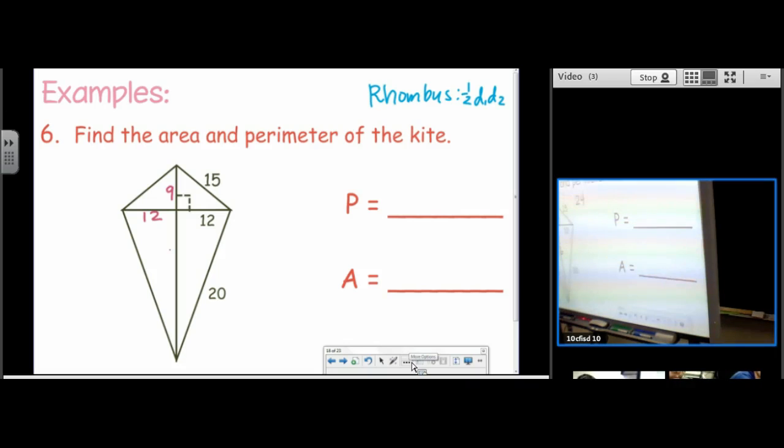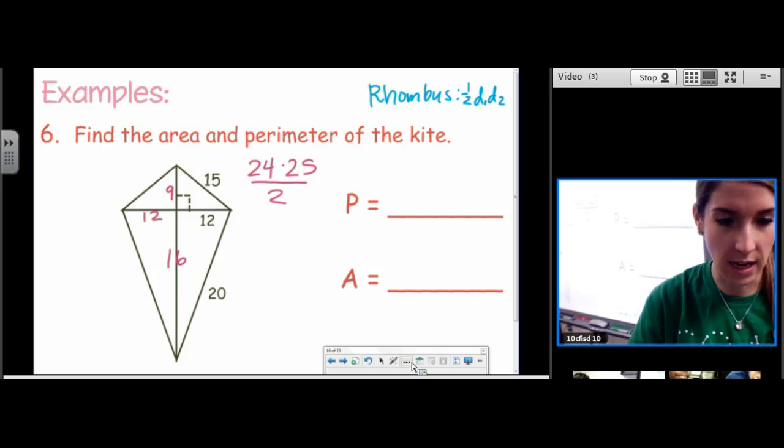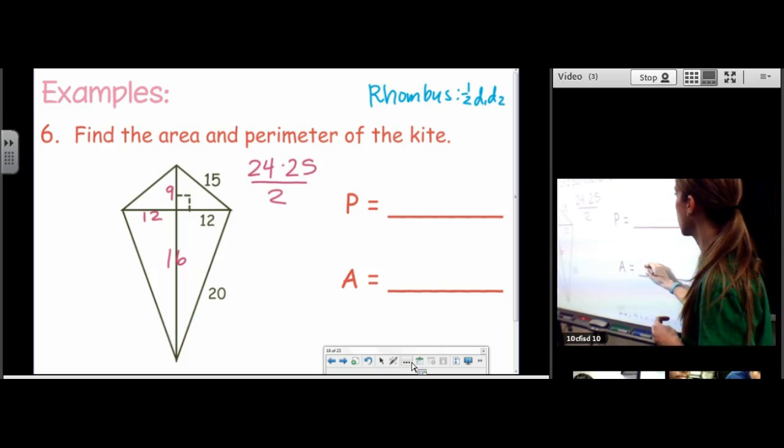20 squared minus 12 squared. 16. So diagonal 1 is 24. 12 plus 12. Diagonal 2 is 25. That's 9 plus 16. And then we divide it by 2. 300. The area is 300.